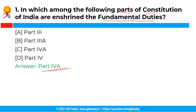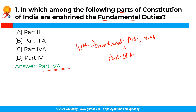The 42nd Constitutional Amendment Act, which came in the year 1976, added a new part in the constitution — Part 4th A. It incorporated fundamental duties by inserting a new article, Article 51A, below Article 51. The objective of incorporating the fundamental duties is to place before the country a code of conduct which the citizens are expected to follow.